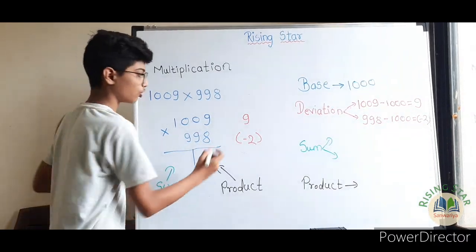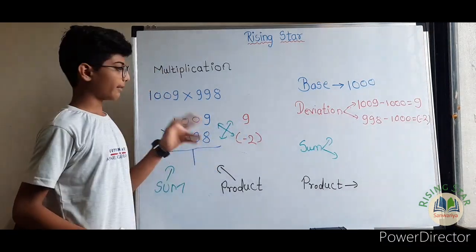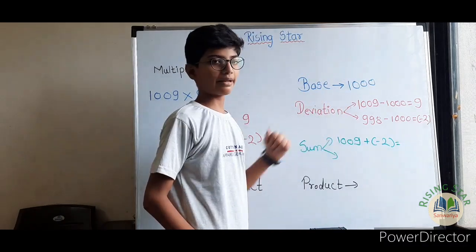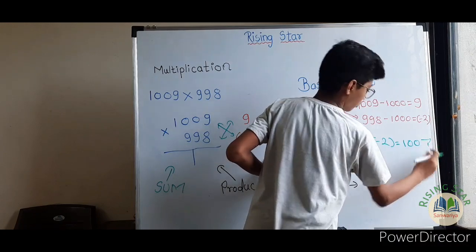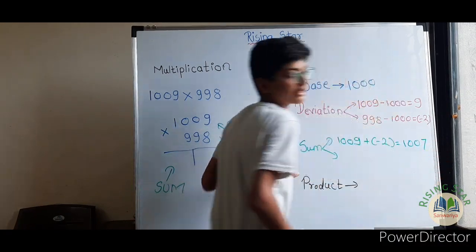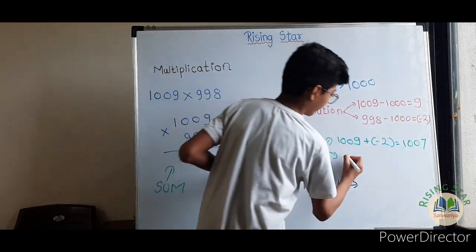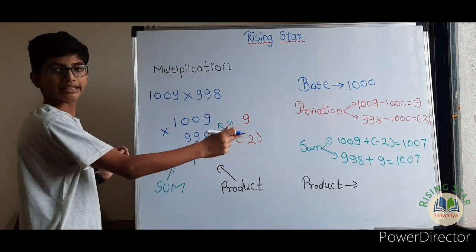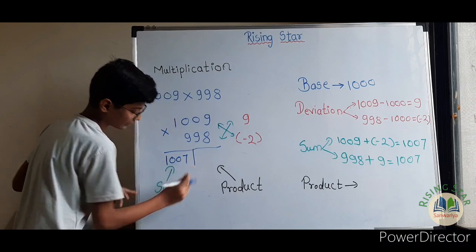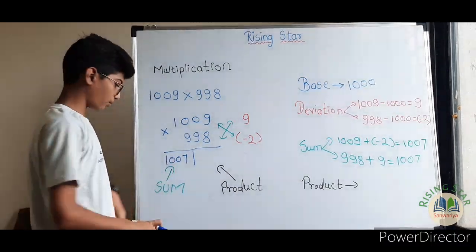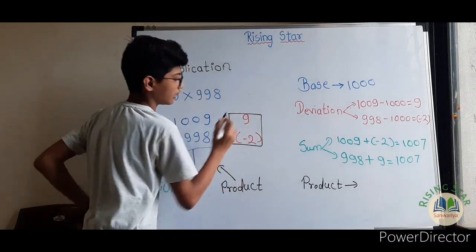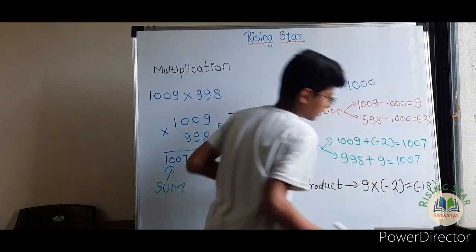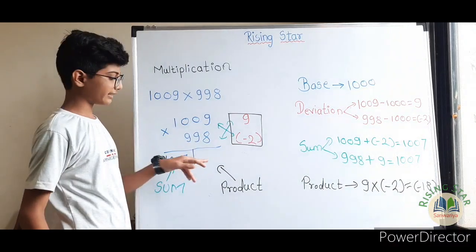Next step is to find the sum. You can add either way and the answer will be the same. 1009 plus minus 2 equals 1007, and 998 plus 9 also equals 1007. Both are the same, so write 1007 in the sum section. Next step is to find the product. Multiply 9 into minus 2, which gives minus 18. Write minus 18 in the product section.